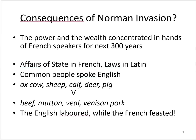The ruling elite, on the other hand, spoke Norman French and ate pork, beef, and mutton, served to them by the English peasants who worked the land and cared for the pigs, cows, and sheep.